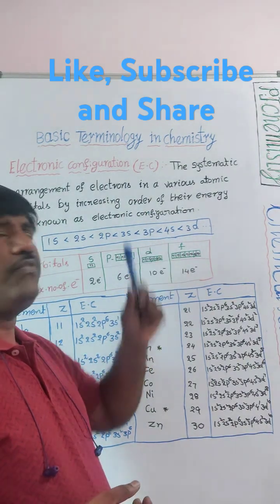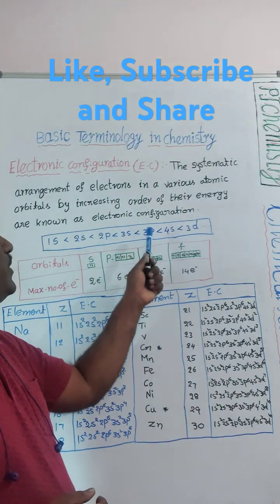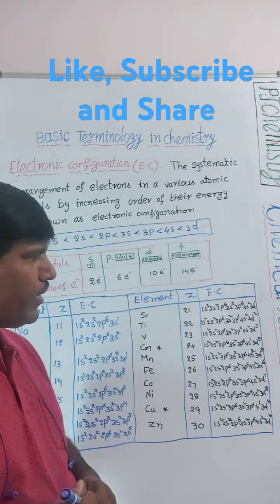The remaining 1 electron we are filling in the 4s1. So 1s2, 2s2, 2p6, 3s2, 3p6, 4s1.